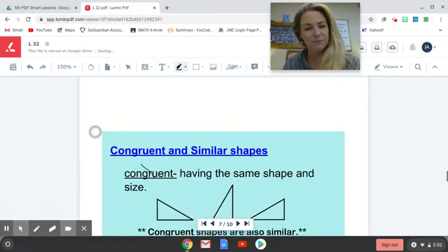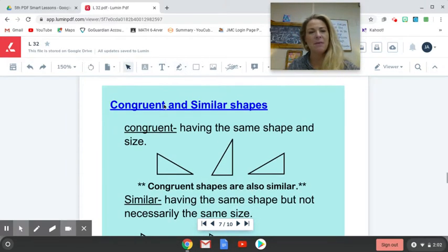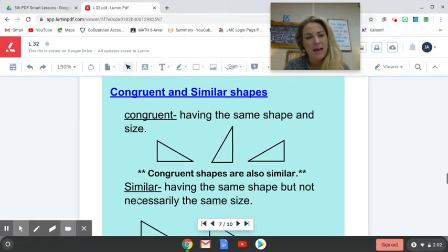This is important. We're talking about congruent and similar shapes here. By definition, congruent means having the same shape and same size. So congruent, same shape and same size. When we're talking about two different objects or pictures or shapes, similar means having the same shape, but not necessarily the same size.